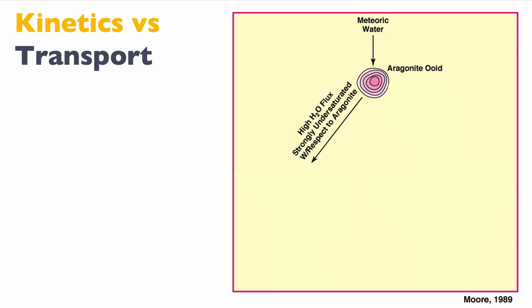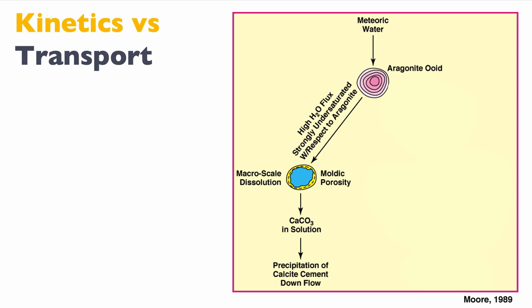Imagine one case where we have a high flux of water, or a water that is strongly undersaturated with respect to aragonite, which means it would have a tendency to dissolve aragonite very easily. What will happen is we will dissolve the aragonite and be left with a moldic porosity. Because we are very undersaturated and/or have a high flow of water, the calcium carbonate will be in solution and transported away from the site of dissolution, so we will have precipitation of a new phase much further down flow.